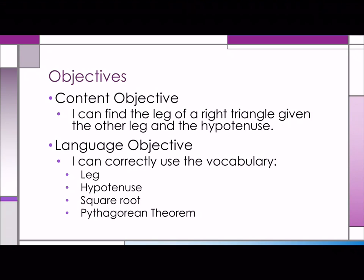So I can find the length of the leg of a right triangle given the other leg and the hypotenuse. So you need to correctly use the vocabulary leg, hypotenuse, square root, and Pythagorean Theorem.